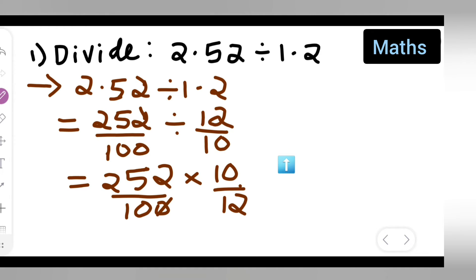So now cancel the terms. Zero zero will get cancelled. Then cancel this term. Working through the division: 2 times 6 are 12, carry 1, and so on. So you're getting 126 upon 10 multiplied by 1 upon 6.